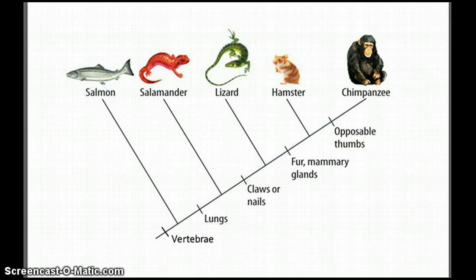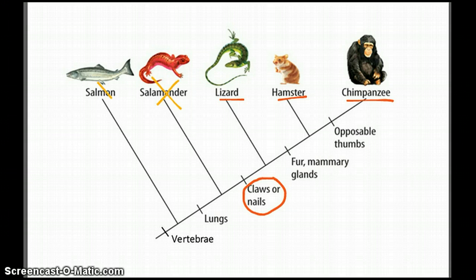We can continue this way and look at the next characteristic. Who has claws or nails? All the organisms above this point, so only the lizard, hamster, and chimpanzee, but not the salamander or the salmon.